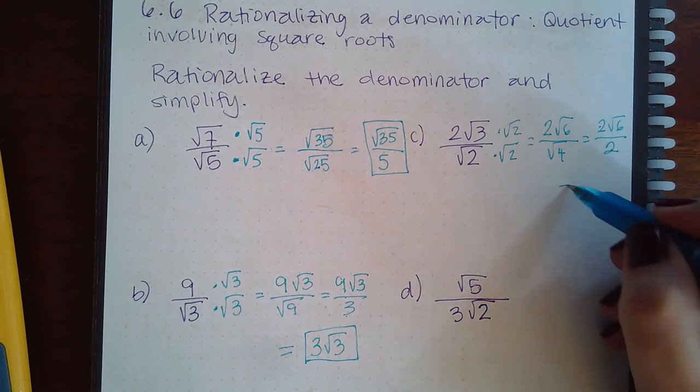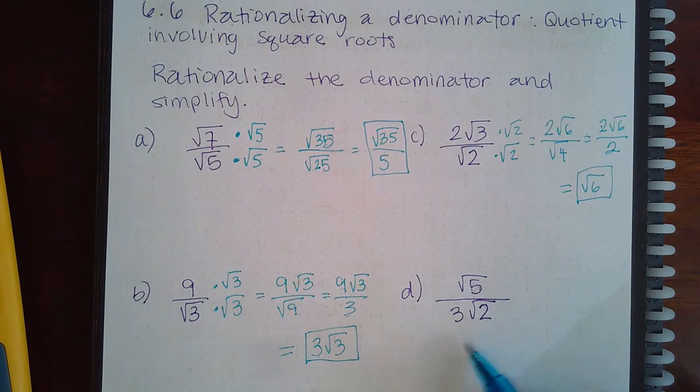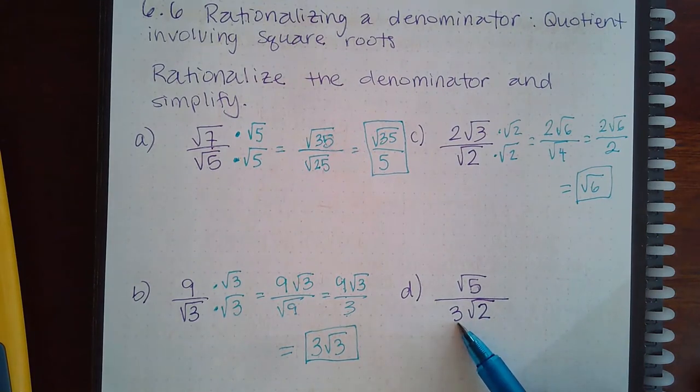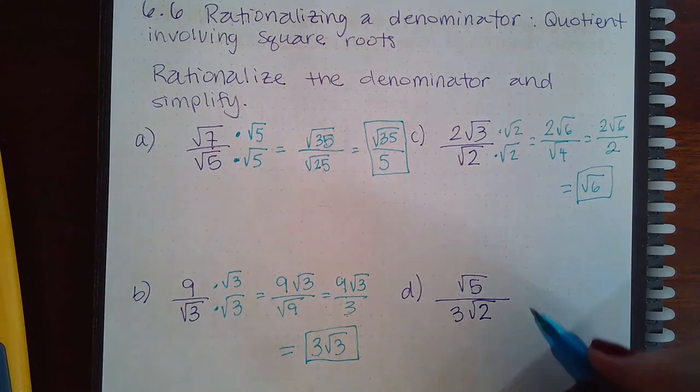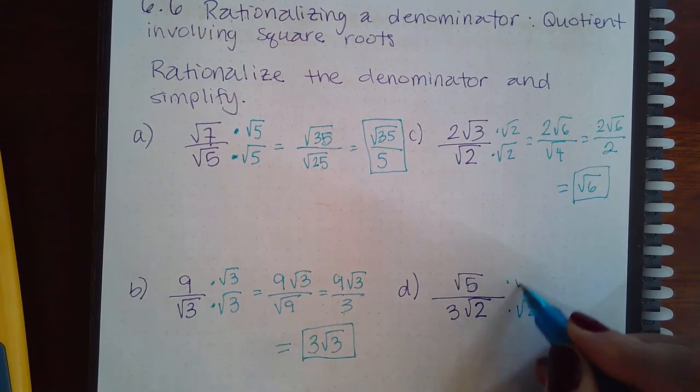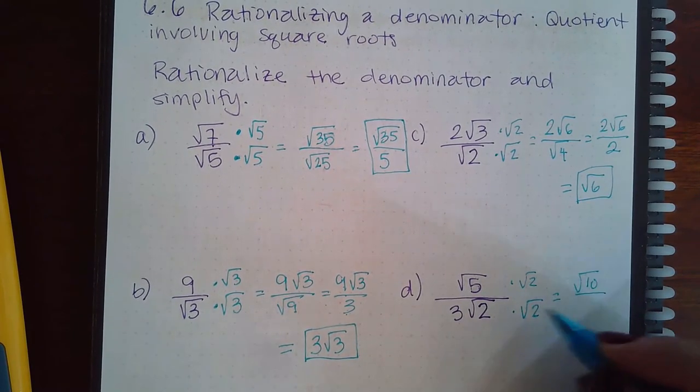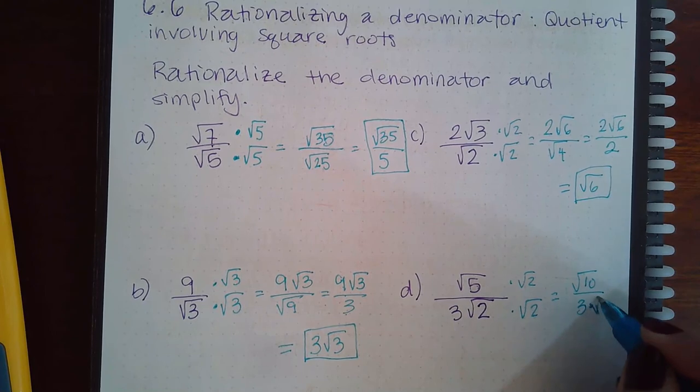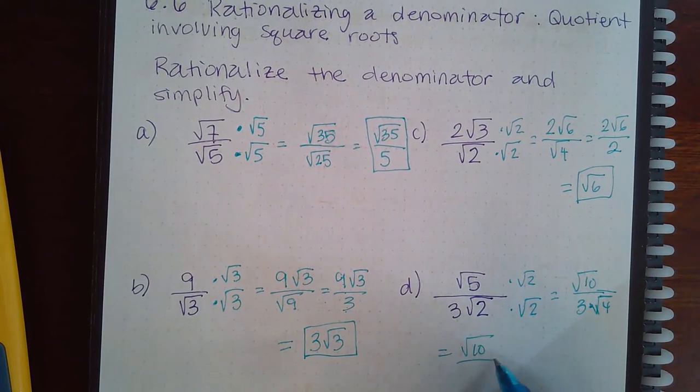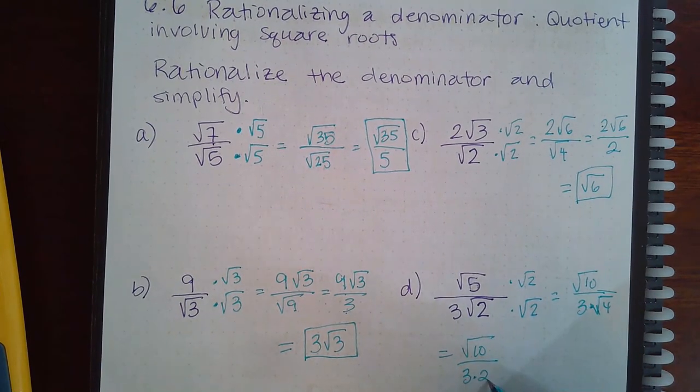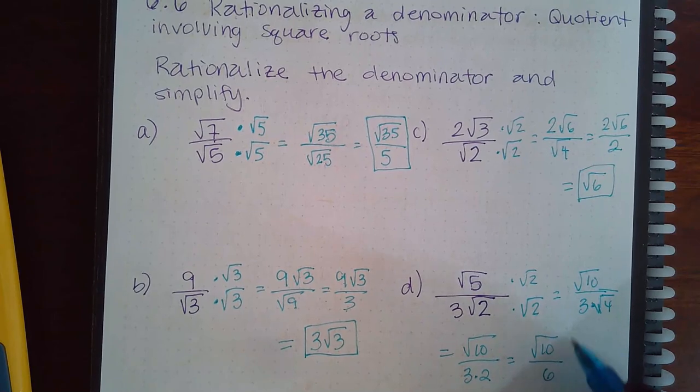Now here this is not the problem. The 3 is not the problem, it's the 2 that has the radical on it. So we need another 2, square root of 2, square root of 2. I get square root of 10 in the numerator, and then I get 3 times, or 3 square root of 4. So then I have square root of 10 over 3 times the square root of 4 is 2. We have square root of 10 over 6 as our final answer.